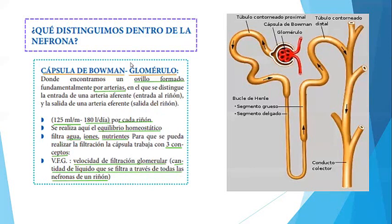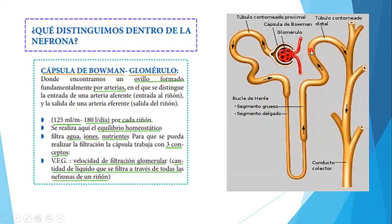Vemos la anatomía de una nefrona. Aparte de la cápsula de Bowman donde está el glomérulo, hay un túbulo contorneado proximal. La sangre va a entrar por acá y va por todo el túbulo. Todo esto, como una asa, se llama bucle de Henle o asa de Henle. Hay un segmento delgado al inicio y luego grueso. Todas las nefronas van a tener su bucle de Henle o asa de Henle. Más arriba hay un túbulo distal contorneado y va bajando hacia el tubo colector.